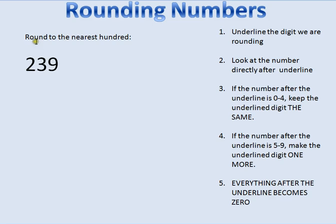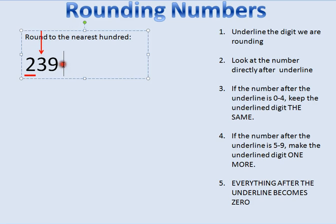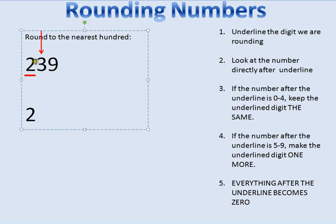Round to the nearest hundred — I underline the number in the hundreds place: ones, tens, hundreds. I look at the number directly after the underline, and this time three is less than five, so I keep the underlined number the same and everything after it becomes zero. I have two numbers after the underline, so I make those two numbers zero.